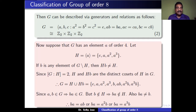Since a and b are in G and G is a group, ba also belongs to G. But b not in H implies ba is also not in H. So ba cannot equal e, a, a², or a³. Also ba is not equal to b, because if ba equals b then a equals identity, which is not possible. Therefore the only possibilities for ba are ab, a²b, or a³b.